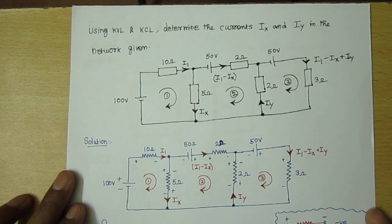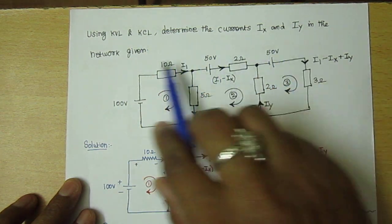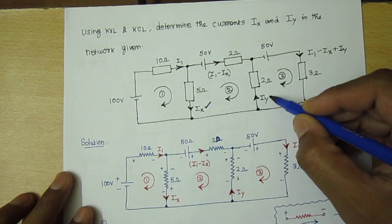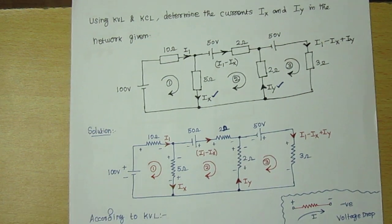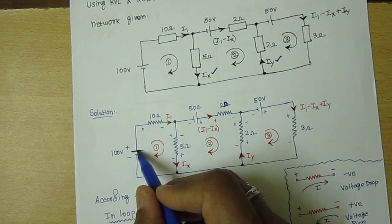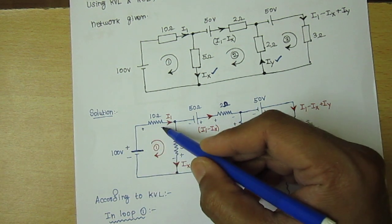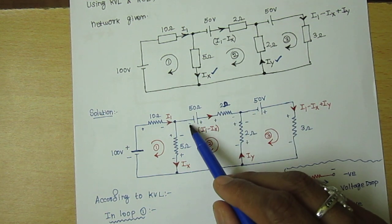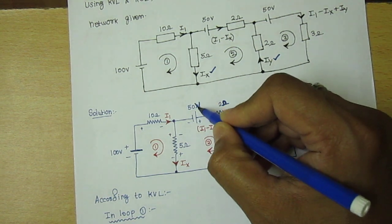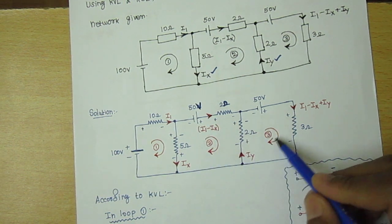Now moving to problem 2. Using KVL and KCL, determine the currents Ix and Iy in the given network. In this network we are supposed to find Ix and Iy. For the given battery, the longer terminal is positive and the shorter one is negative, so positive should be connected with positive. This gives us positive, negative, positive, negative. The battery here is 50 volt. All loops are made in the clockwise direction as given in the question.